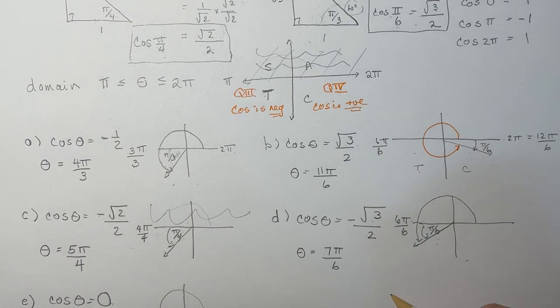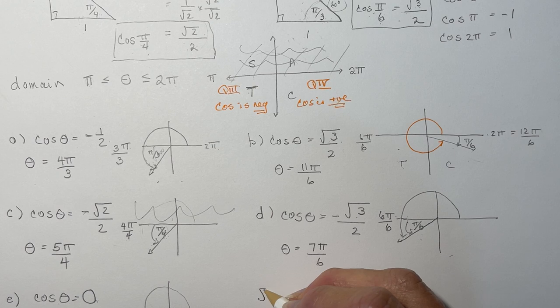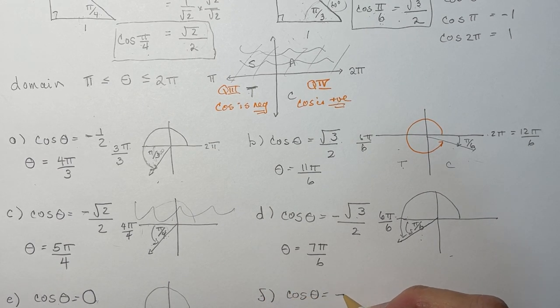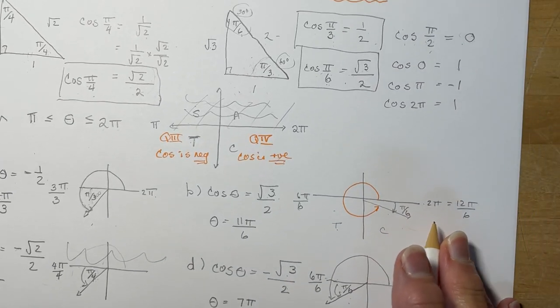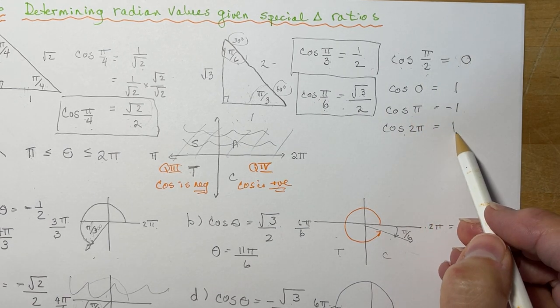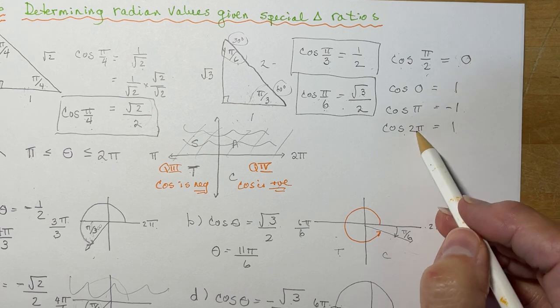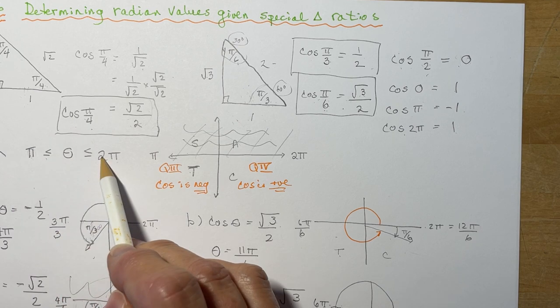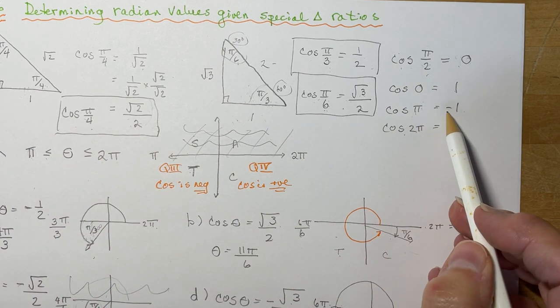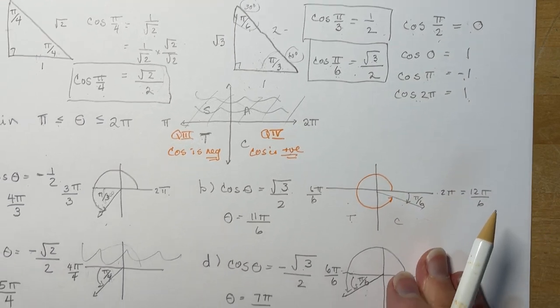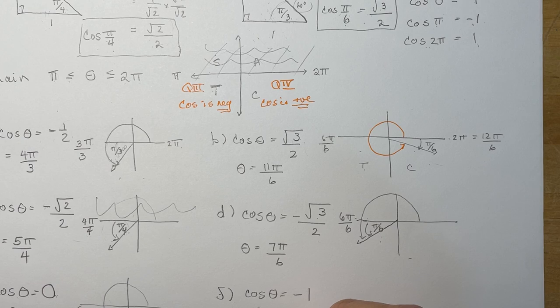And the last one, F, it says cos theta equals negative 1. So we did negative 1, and we found that the cos of pi is negative 1, but the cos of 2 pi is positive 1. So even though both these numbers are within the domain, because the domain was less than or equal to, pi would give us the negative 1, and 2 pi would give us positive 1. So again, there's only one solution, and that's theta is equal to pi.